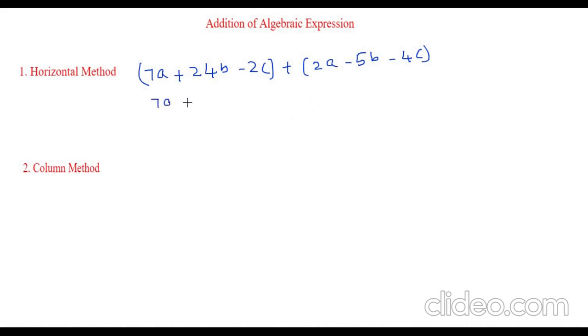So it would be 7a plus 24b minus 2c, plus times plus is plus 2a, plus times minus is minus 5b, plus times minus is minus 4c. Multiplication of integers I have already explained in my video. You can refer that. So now we have got the expression.